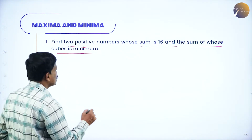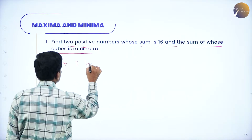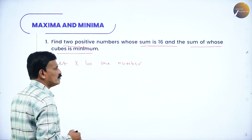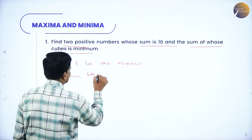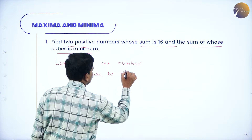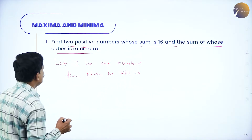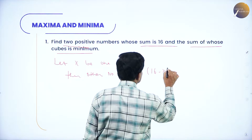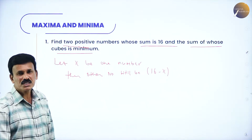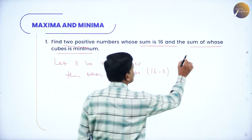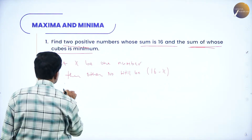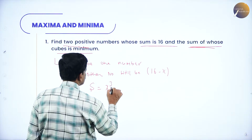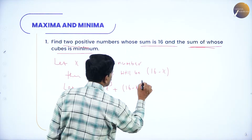Let x be one number. Then the other number will be 16 minus x, since the sum of two positive numbers is 16. Let s represent the sum of the cubes of these two numbers, that is, s is equal to x cube plus (16 minus x) cube. This is the given condition.